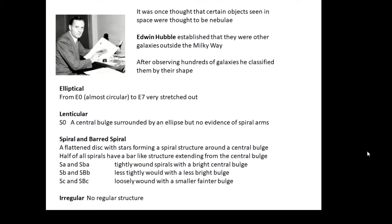Spiral galaxies have spiral arms, and about half of them have a bar shape in the middle — those are called barred spirals. Remember that the Milky Way is an SBb galaxy.